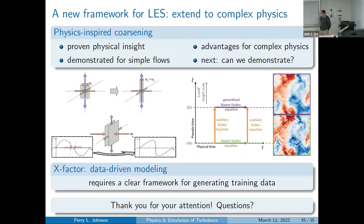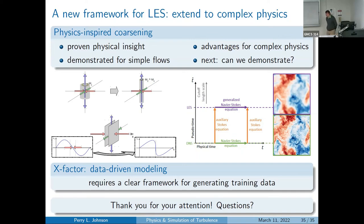Question/brainstorm: If the Gaussian filter is equivalent to running a diffusion equation, what about reversing it — defiltering? Answer: Defiltering would be like running a diffusion equation with negative viscosity — an ill-posed problem. Information is intrinsically lost in the filtered field; you have to give up information to run on a coarser grid. You can't simply run it backwards as a practical modeling approach.